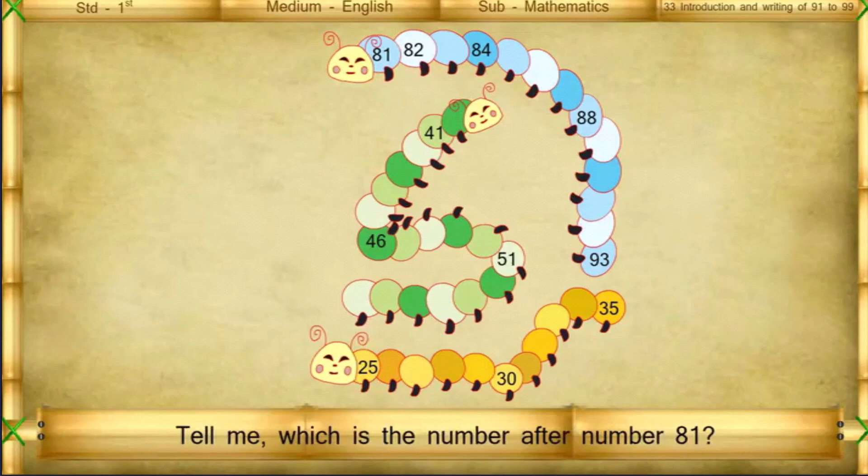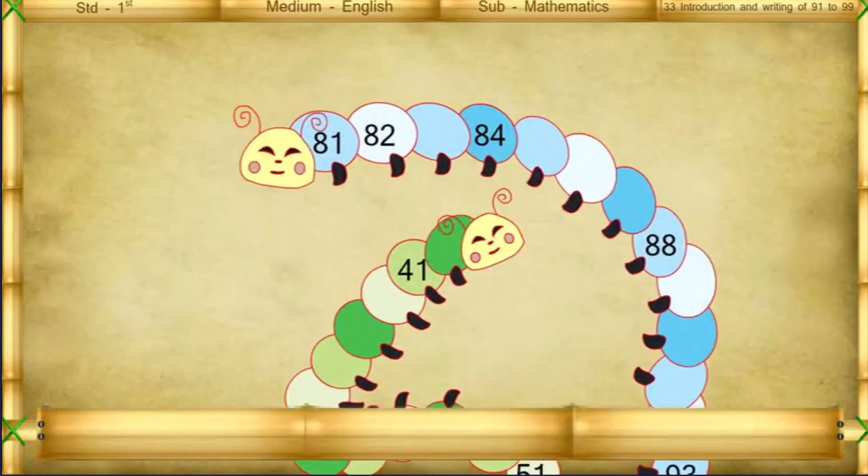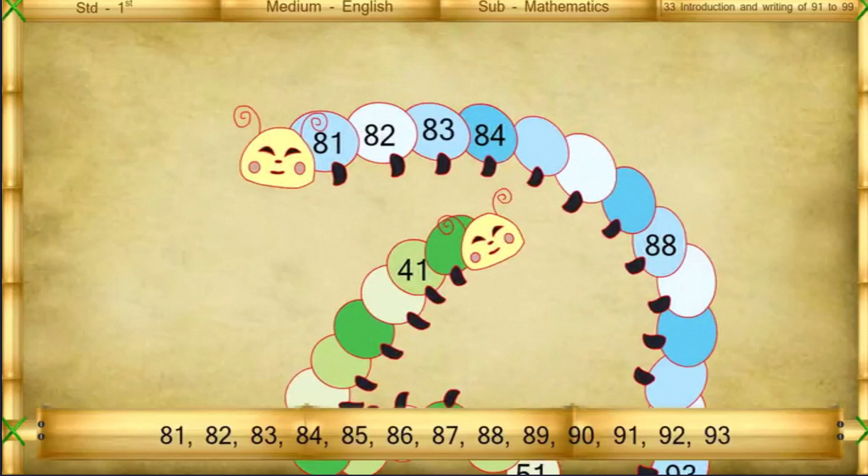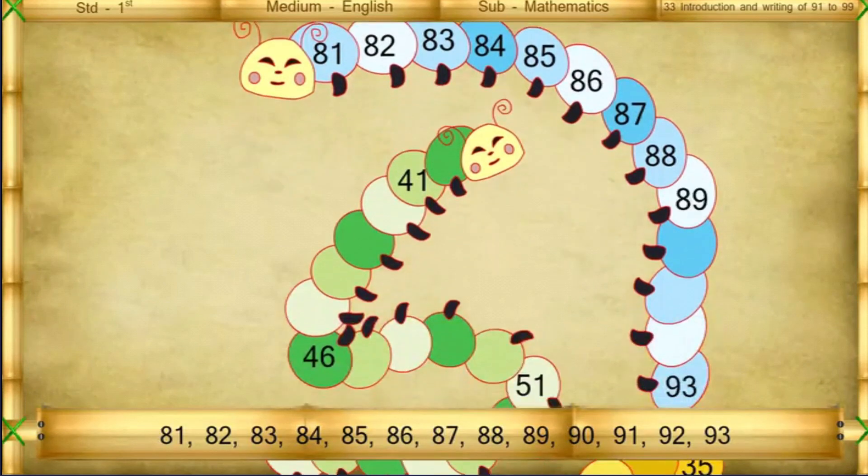Tell me which is the number after 81? 81, 82, 83, 84, 85, 86, 87, 88, 89, 90, 91, 92, 93.